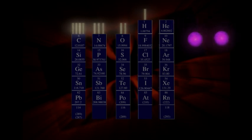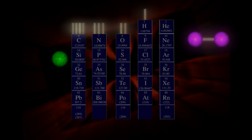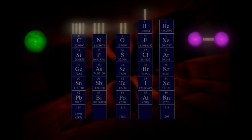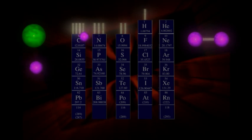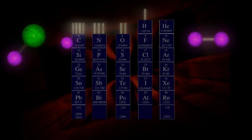Another example is water. We can see that oxygen wants to make two bonds, because it is in the second column from the right. So it can get together with two hydrogen atoms, which each want to make one bond, and all three atoms are happy.